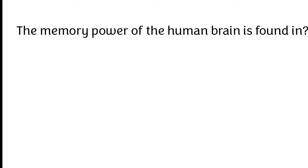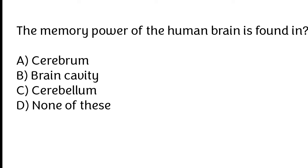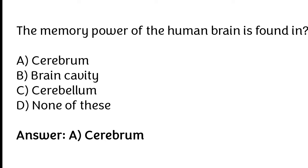The memory power of the human brain is found in: cerebrum, brain cavity, cerebellum, or none of these. The correct answer is option A. The memory power of the human brain is found in cerebrum.